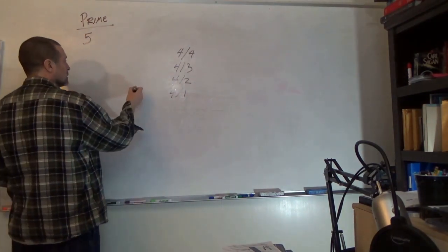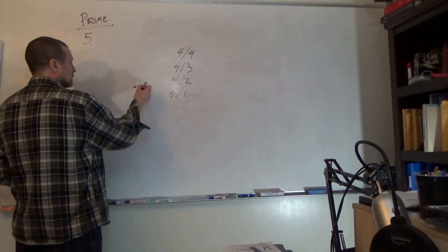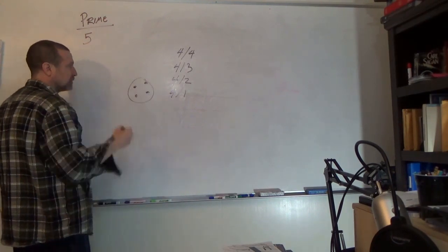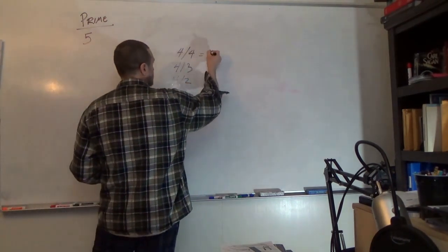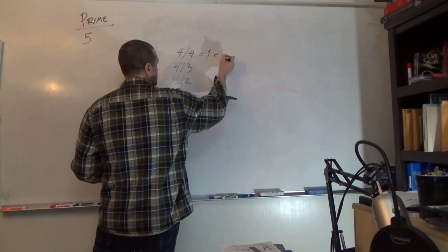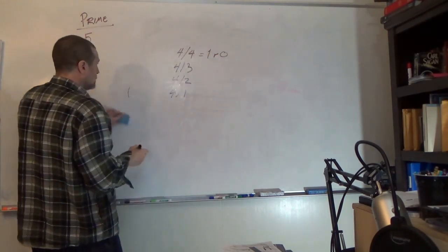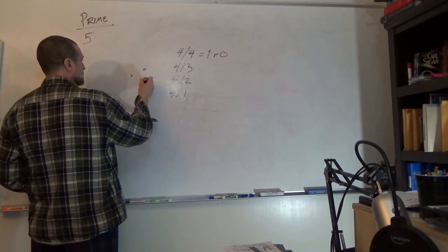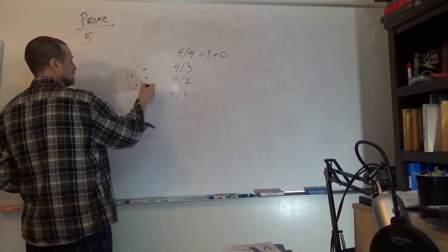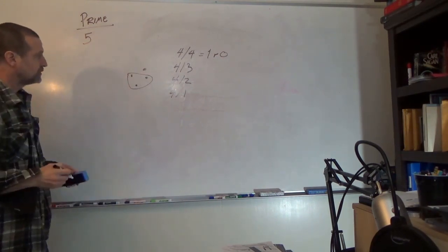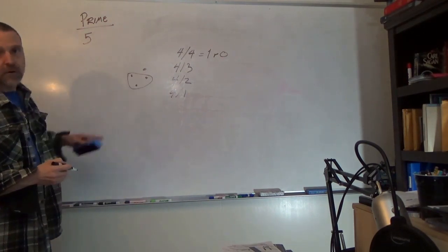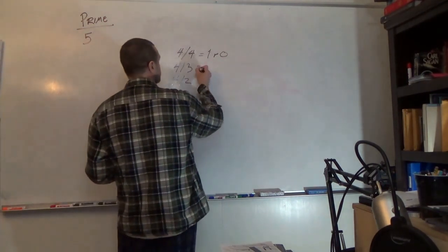4 divided by 4: 1 group of 4, no remainder. 4 divided by 3: there's 1 group of 3 and 1 remainder. So far, so good.